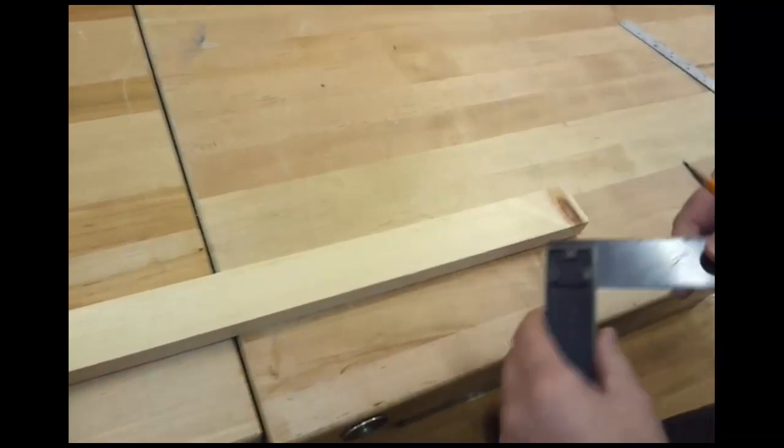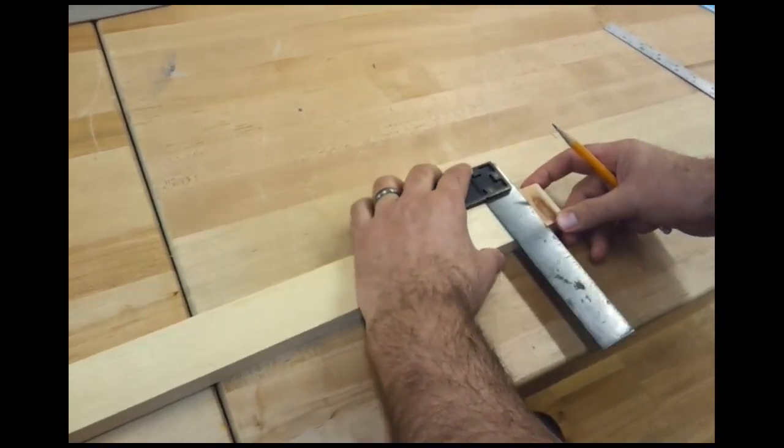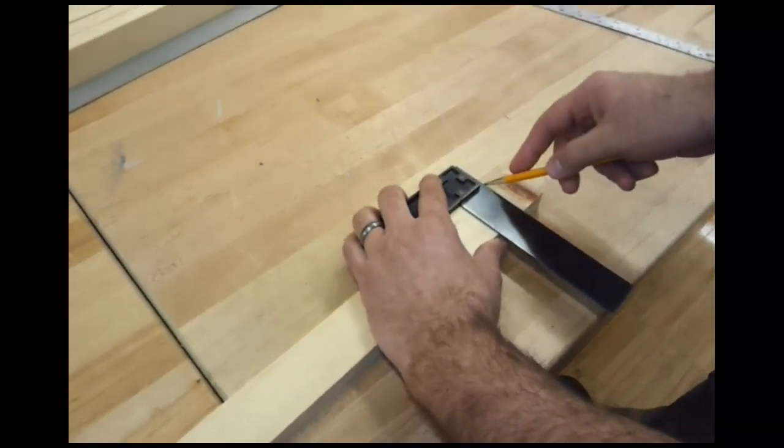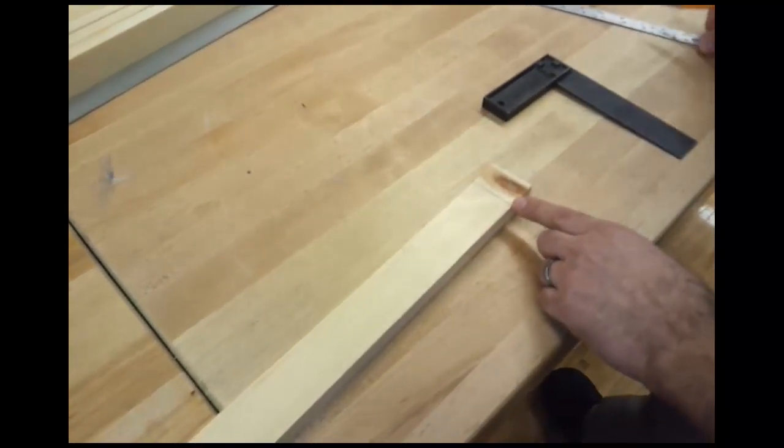So for this end, what I do is take a square and I'm going to squeeze it against the wood, holding it tight, and then I can mark a straight line across. This gives me the start to my puzzle.